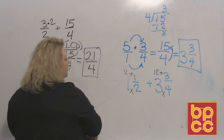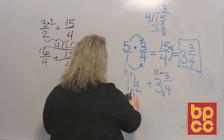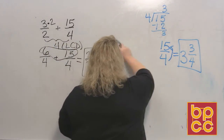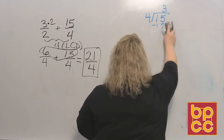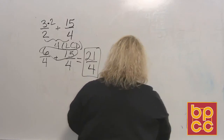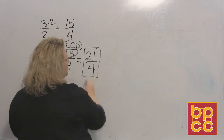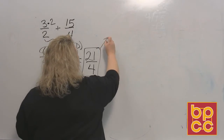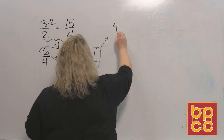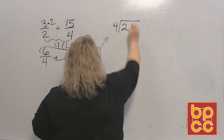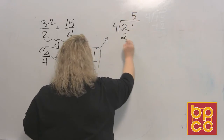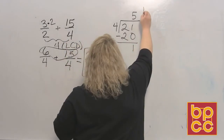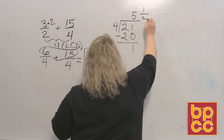Twenty-one-fourths doesn't make sense in practical terms — when you go to the fabric store, you don't say 'I need twenty-one-fourths yards.' You say something like 'two and one-fourth yards.' So we convert back to a mixed number: four divides into twenty-one five times, making twenty, with one left over. That gives us five and one-fourth yards.